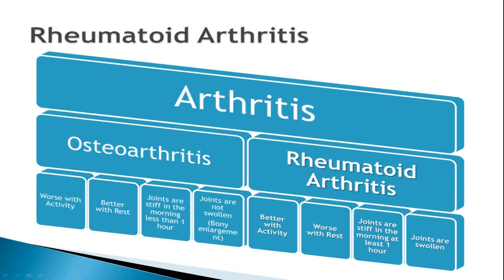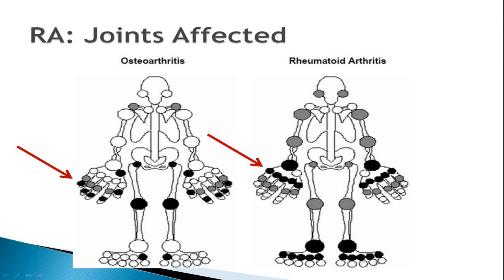In osteoarthritis, joints aren't truly swollen — there may be bony enlargement at times, but not true swelling. The joints affected in rheumatoid arthritis are also very different. In rheumatoid arthritis, the joint at the base of the finger is very commonly affected, and that does not happen in osteoarthritis, where it's the joints at the very end of the fingers that are more common. Rheumatoid arthritis can affect virtually any joint other than the lower back, compared to osteoarthritis where we more commonly see it in the hips and below — which is why you often hear about hips and knees being replaced.